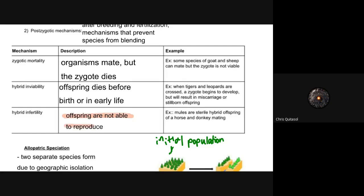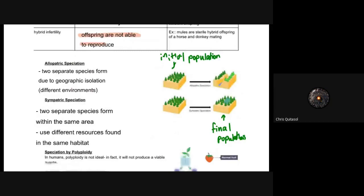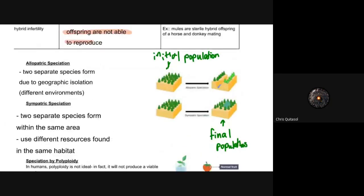Lastly is the concept of hybrid infertility. The offspring are able to come to term but are not able to reproduce themselves. Mules are sterile hybrid offspring between a horse and a donkey, so it's physically impossible for that mule to pass on its genetic information.